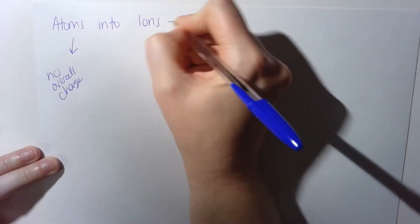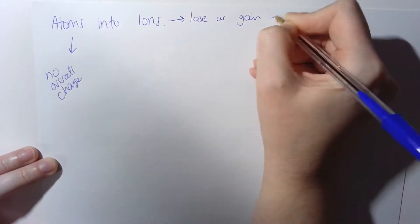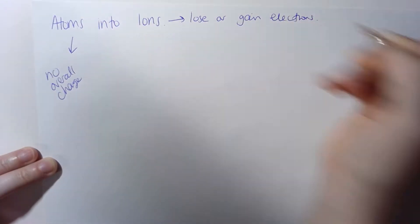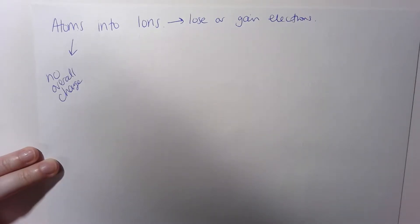Now to change an atom into an ion, the atom needs to lose or gain electrons. Remember we talked about that electrons have negligible mass and they're the things that can be moved from one atom to another, changing them then into ions.